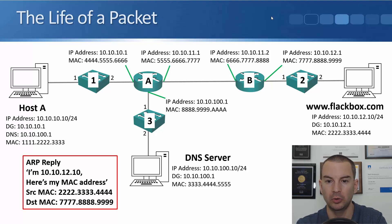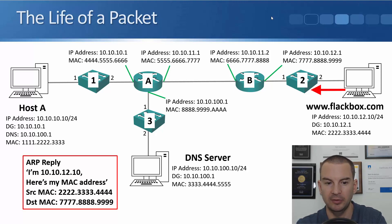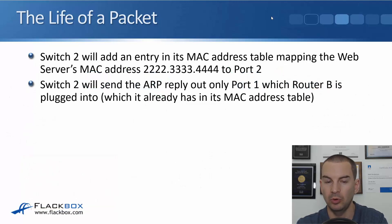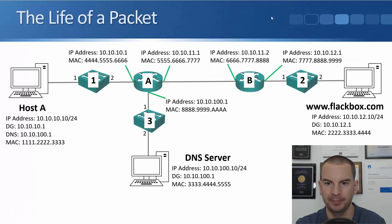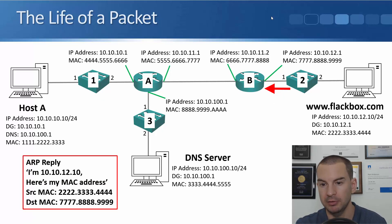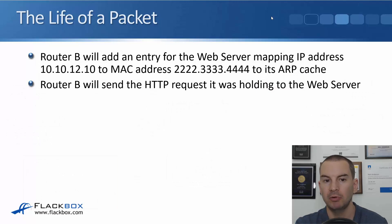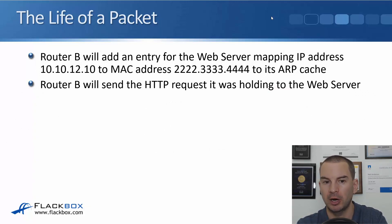The ARP reply goes back saying: I'm 10.10.12.10, here's my MAC address of 2.3.4, going to destination MAC 7.8.9. Switch 2 will receive that and add an entry to its MAC address table mapping the web server's MAC 2.3.4 to port 2. Switch 2 will then send the ARP reply out only port 1, which Router B is plugged into. Router B will get that and add an entry mapping IP 10.10.12.10 to MAC 2.3.4 to its ARP cache.